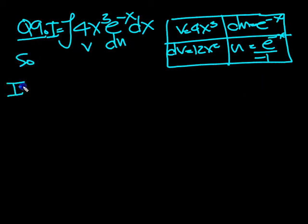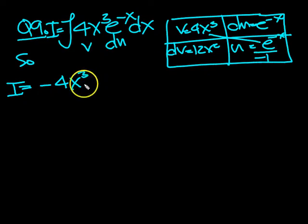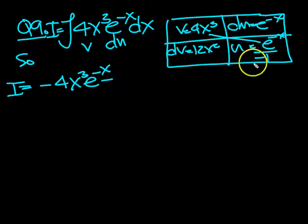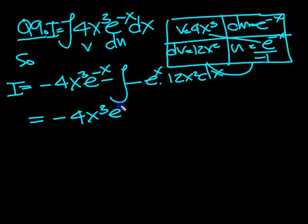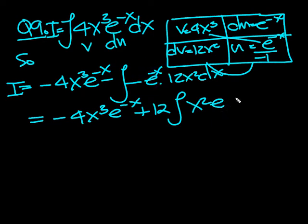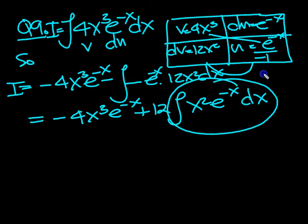So i equals uv — those two — so that will be minus 4x cubed e to the minus x. That's the uv minus the integral of u dv dx. So it's the integral of minus e to the minus x times 12x squared dx. Tidying that up, it's minus 4x cubed e to the minus x plus 12 x squared e to the minus x dx. So let's circle that and label it j.